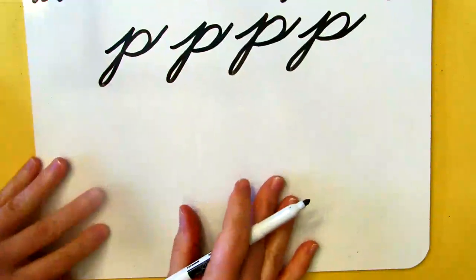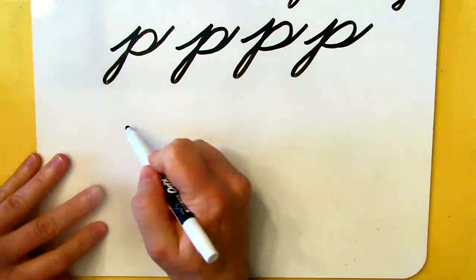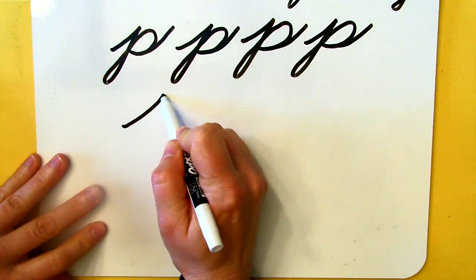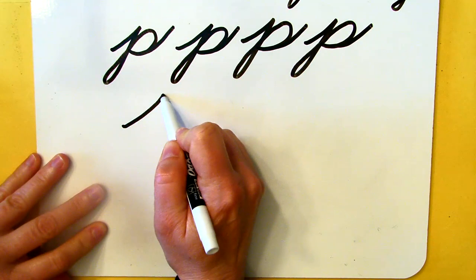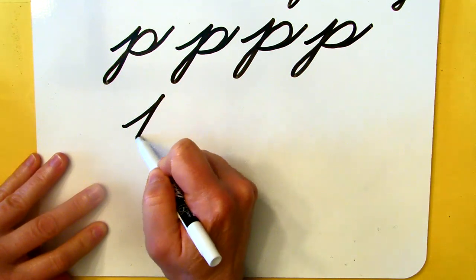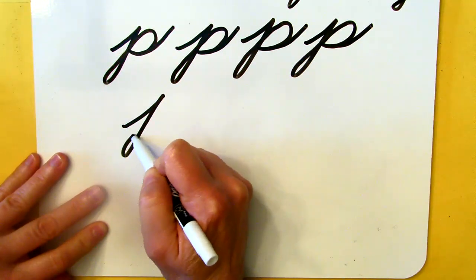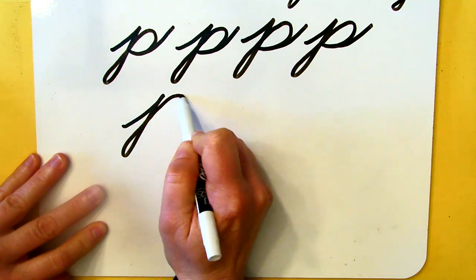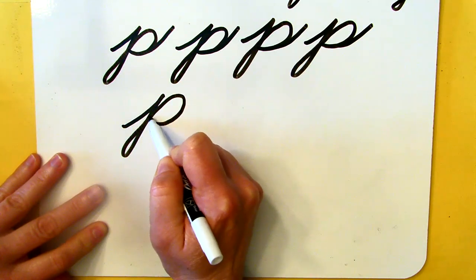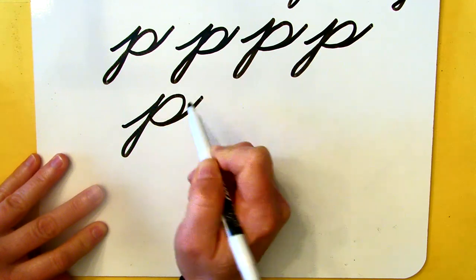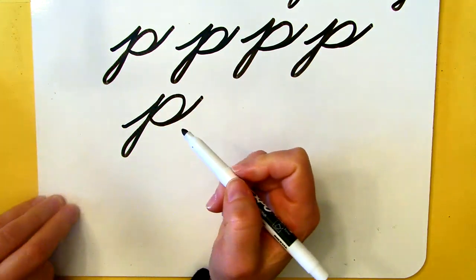I'm going to show you again really slowly. Undercurve, pull your pen to the basement, pull back, loop back, then go up and over curve, and then undercurve. That's your lowercase P.